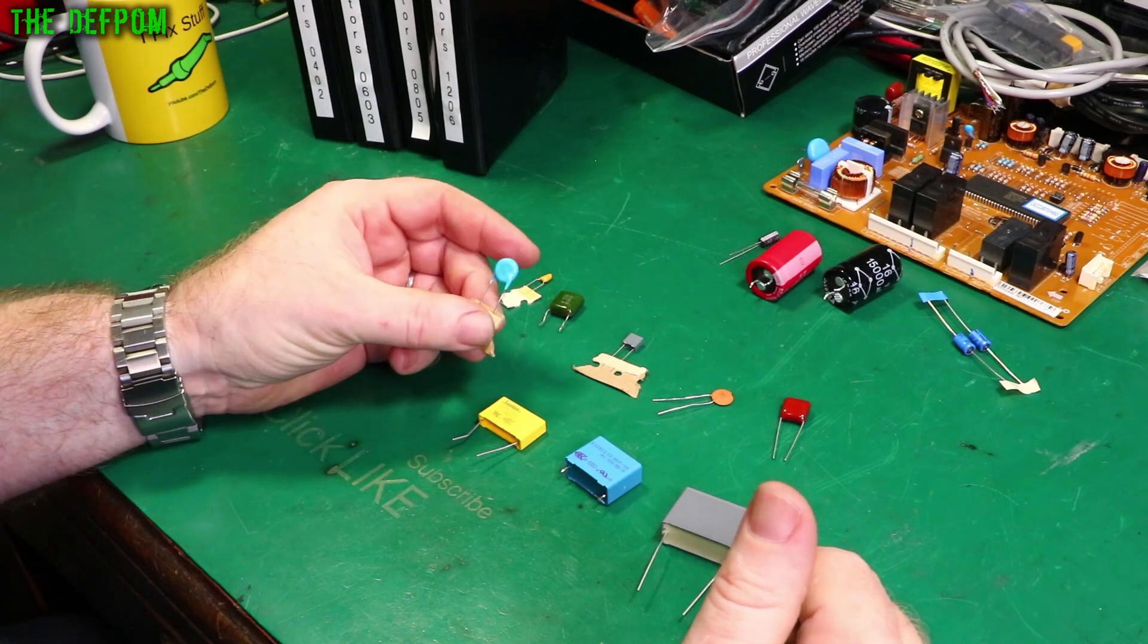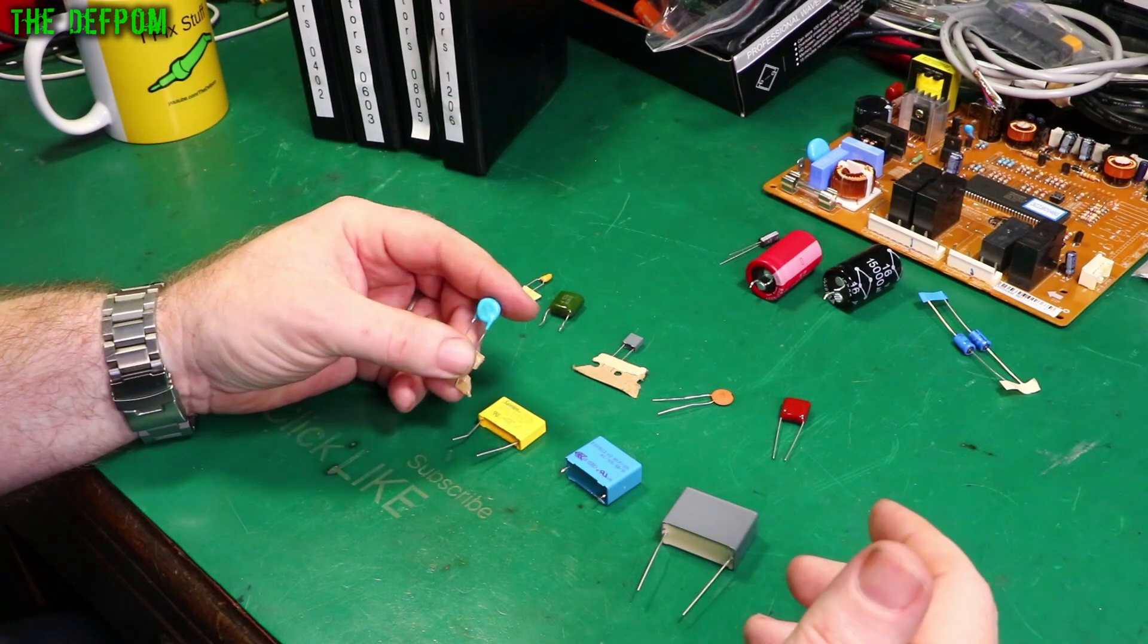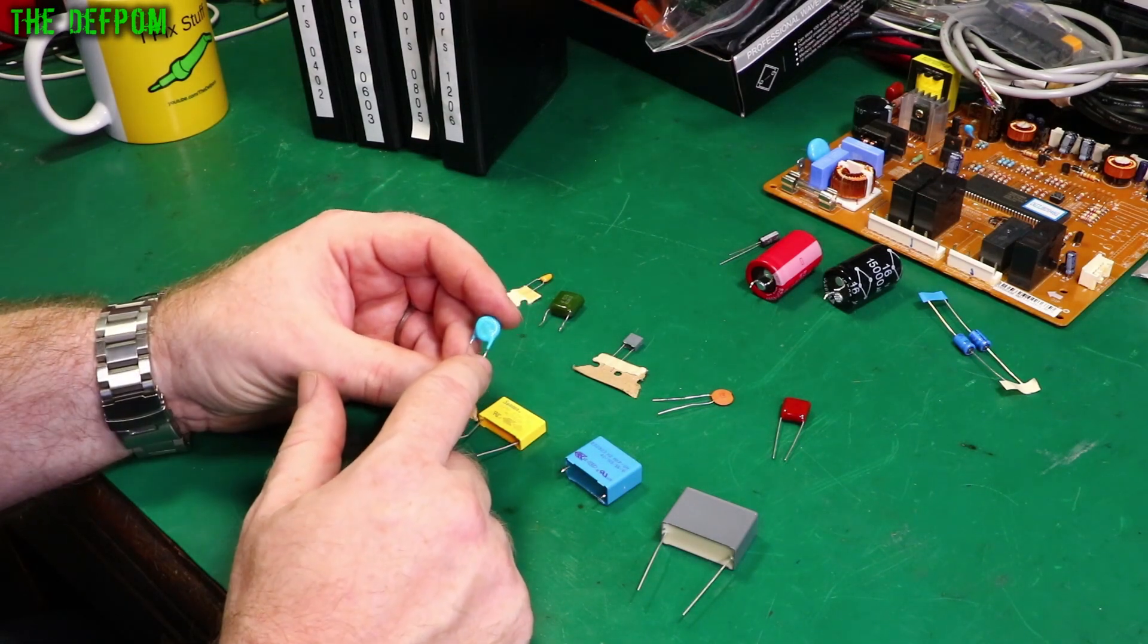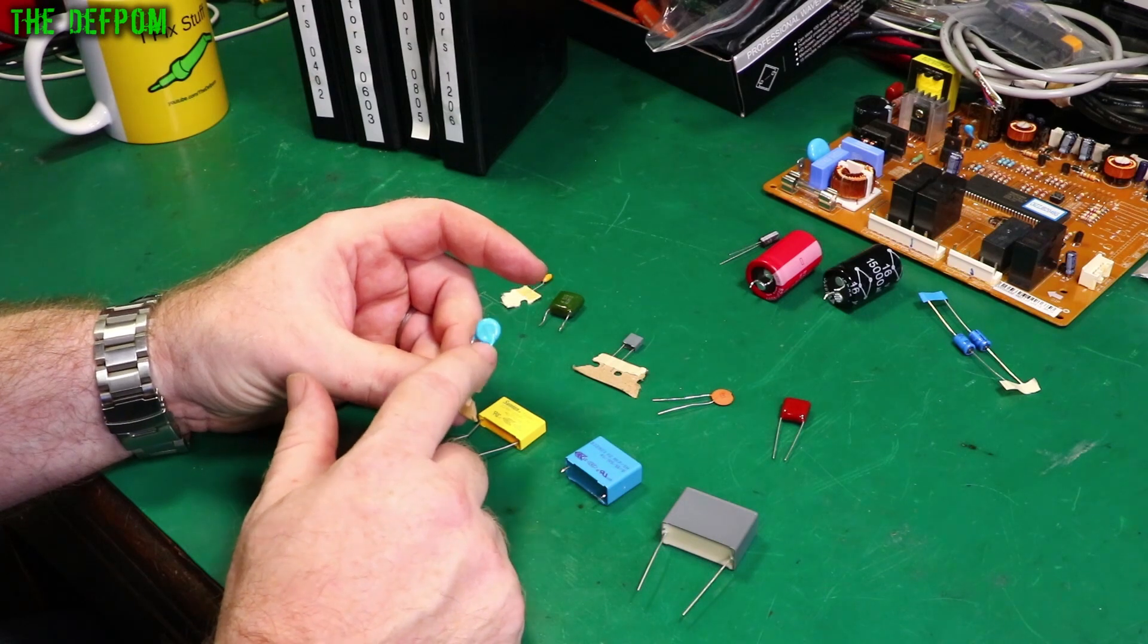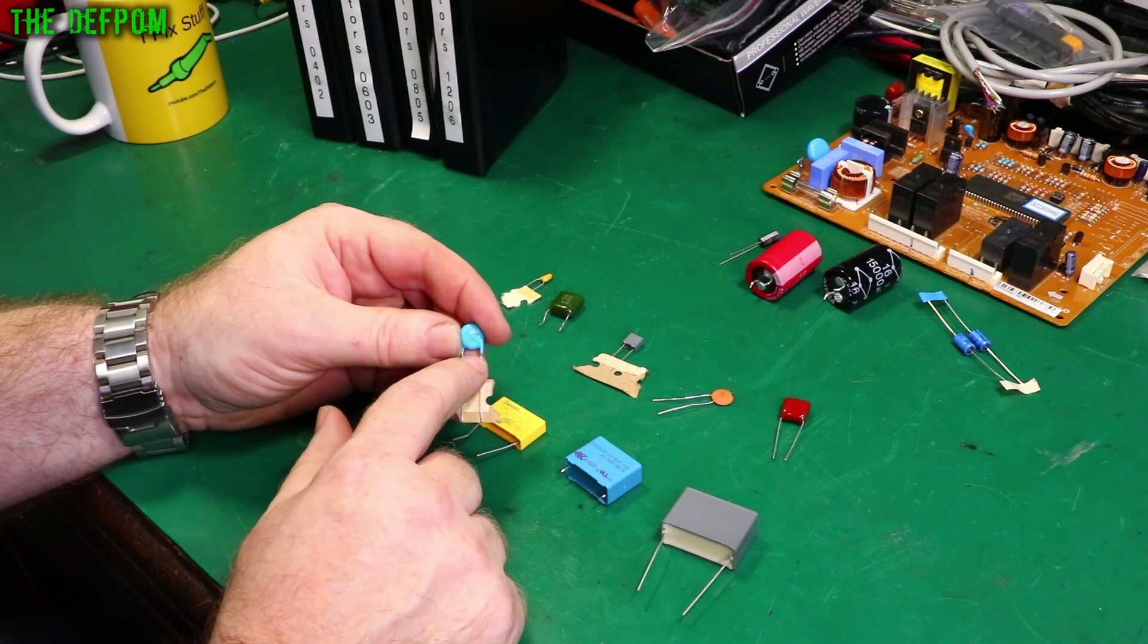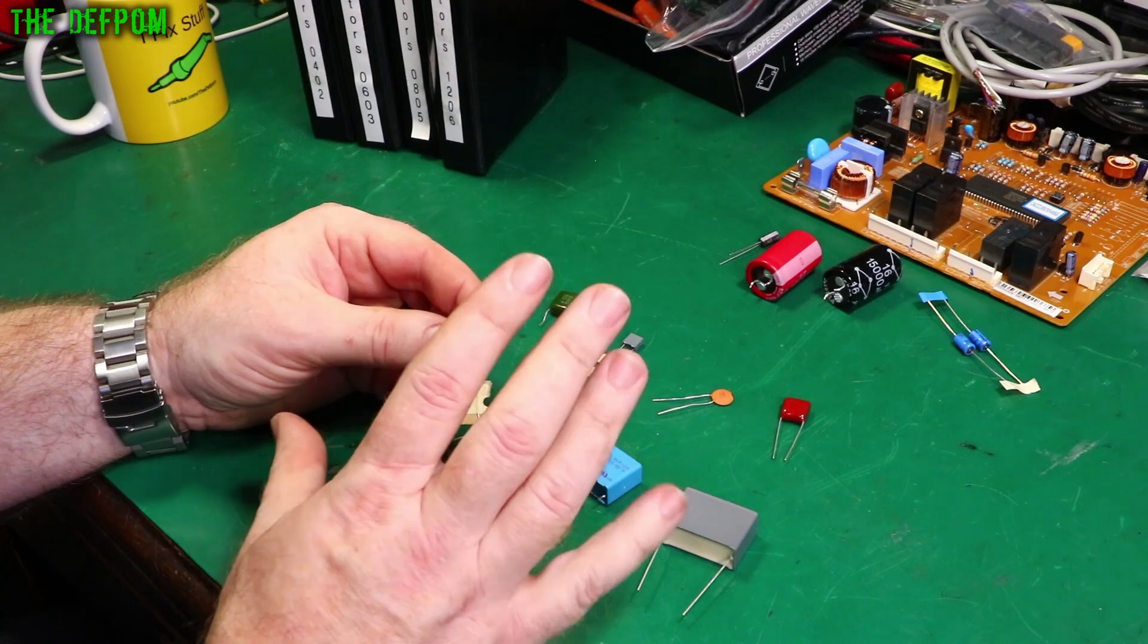So we've got a Y class cap here. Y class goes line to ground. Basically this will go between the phase or the hot side or whatever you may call it in your country, the main AC feed, that goes to ground. Y class caps are designed to fail open. So if this fails it will go to an open circuit.